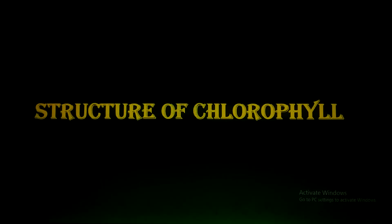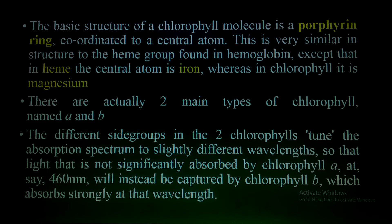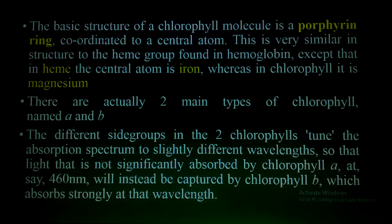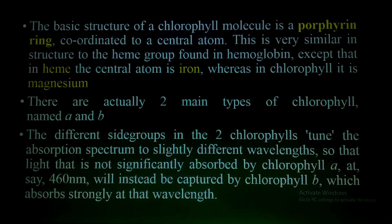Now I'm going to discuss the structure and chemical composition of chlorophyll. The basic structure of the chlorophyll molecule is a porphyrin ring and a long hydrocarbon chain. The porphyrin ring is coordinated to a central atom — and the central atom is magnesium. This porphyrin ring is very similar in structure to the heme group found in hemoglobin, but the difference is that in heme the central atom is iron, while in chlorophyll the central atom is magnesium.